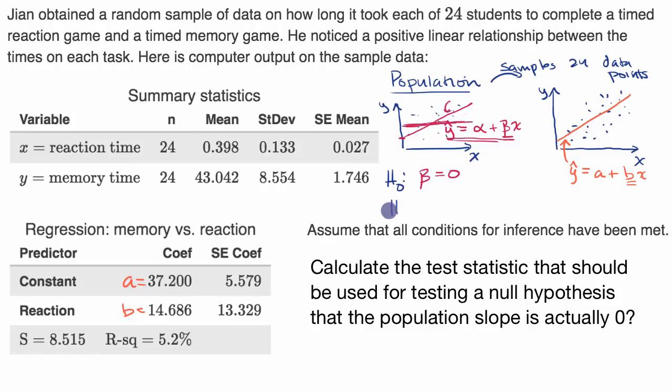If you suspect that there is a positive linear relationship, you could say something like, my alternative hypothesis is that my beta is greater than zero. Or if you suspect that there's just some linear relationship, you don't know if it's positive or negative, then you might say that beta is not equal to zero. But here it says he suspects a positive linear relationship, so this would be his alternative hypothesis.